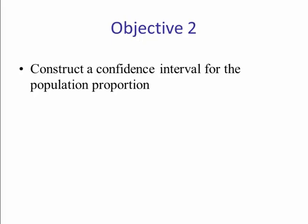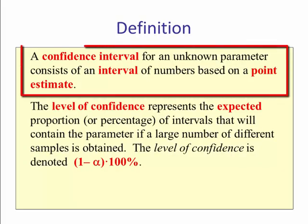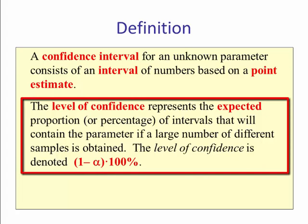Lesson objective. A confidence interval for an unknown parameter consists of an interval of numbers based upon a point estimate. The level of confidence represents the expected proportion or percentage of intervals that will contain the parameter if a large number of different samples. The level of confidence is denoted 1 minus alpha times 100%.